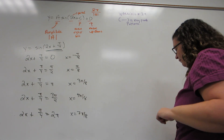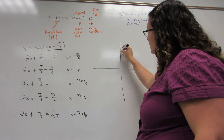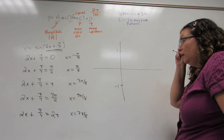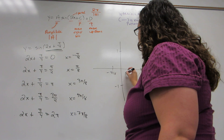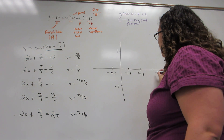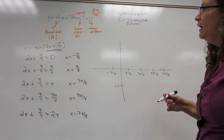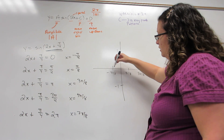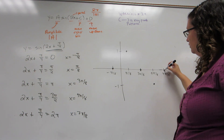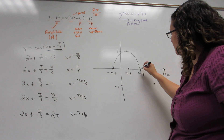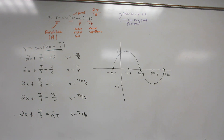Now let's produce our graph. The y-coordinates are the same: 0, 1, and negative 1. Our x-coordinates are now negative pi over 8, pi over 8, 3 pi over 8, 5 pi over 8, and 7 pi over 8. Then we just place our dots. Sine starts at the center, the next key point is high, center, low, center. We connect our curve, and this is our graph of sine of 2x plus pi over 4.